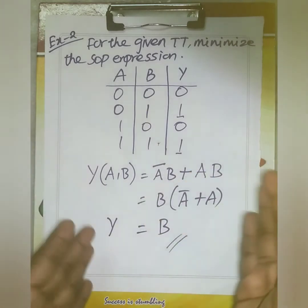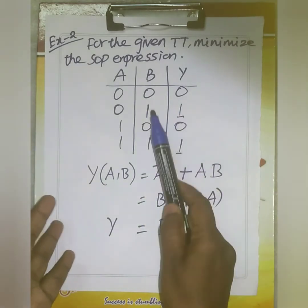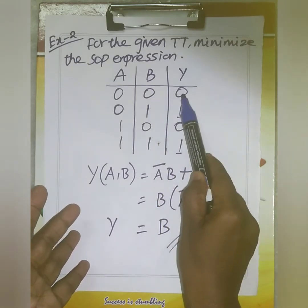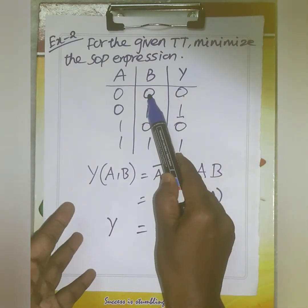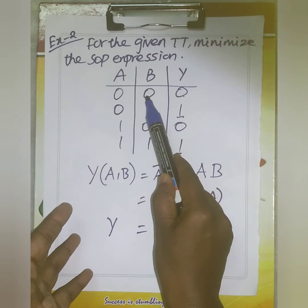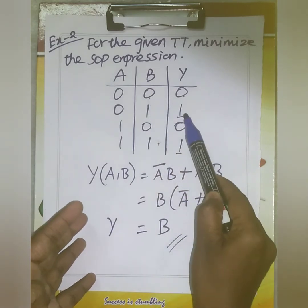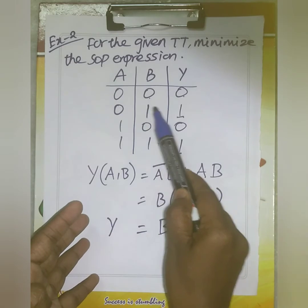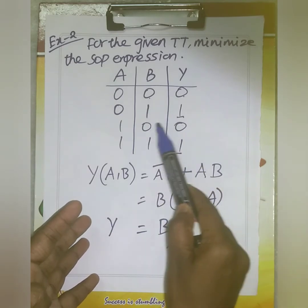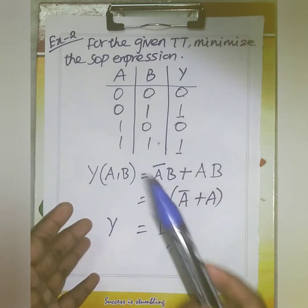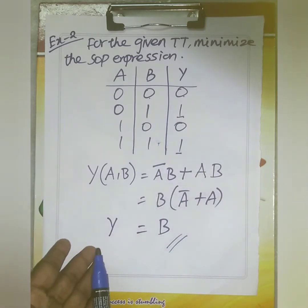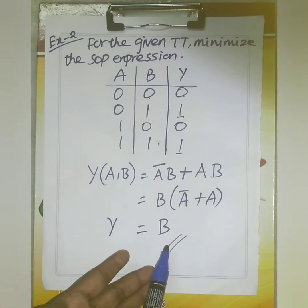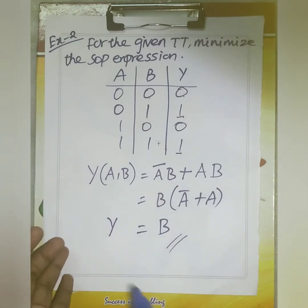We can verify with the truth table: when B = 0, output is 0; when B = 1, output is 1. This confirms that Y = B is correct.